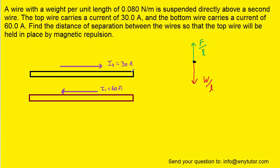We can come over on the side and draw a free body diagram of the top wire, and it turns out that there are two forces acting on the top wire. There is the weight force, which is directed downward, and then there is this magnetic force, which is directed upward.